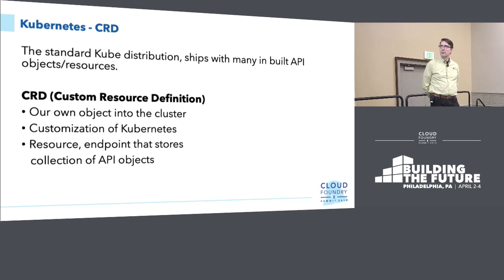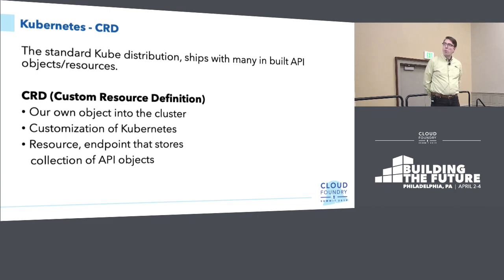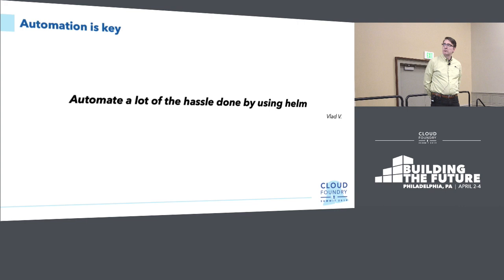Custom resources are kind of the secret sauce of the CF operator. Through resources we define the logic we want in our cluster. By default, Kube ships with standard resources like stateful sets, deployments, and jobs. But for the CF operator, we're going to use customizations of those resources to leverage functionalities and achieve the requirements we want. For example, once we have a BOSH manifest, we'd like to convert specific blocks — like instance groups — into a set of custom resource definitions.